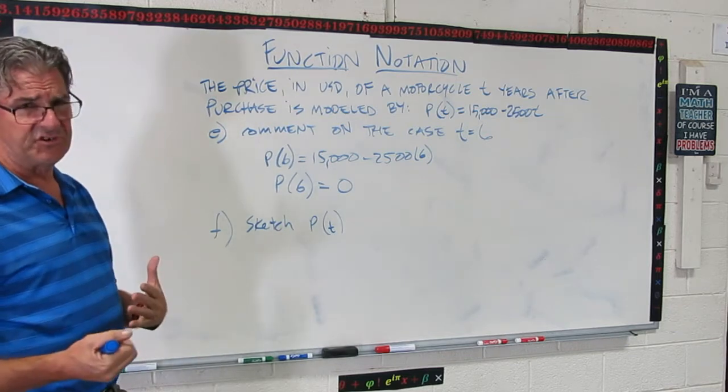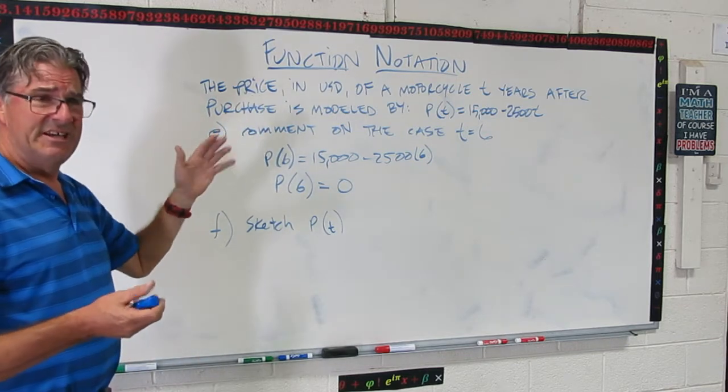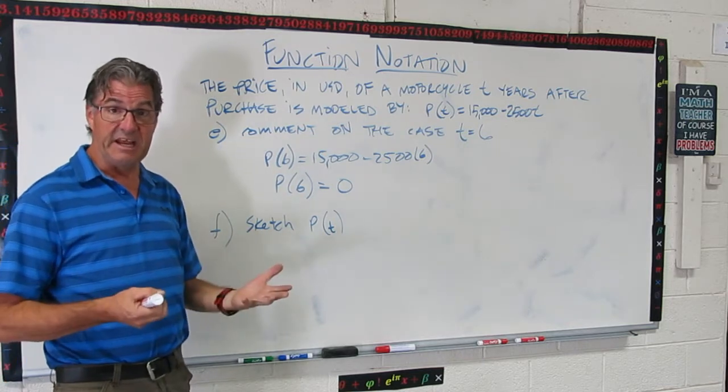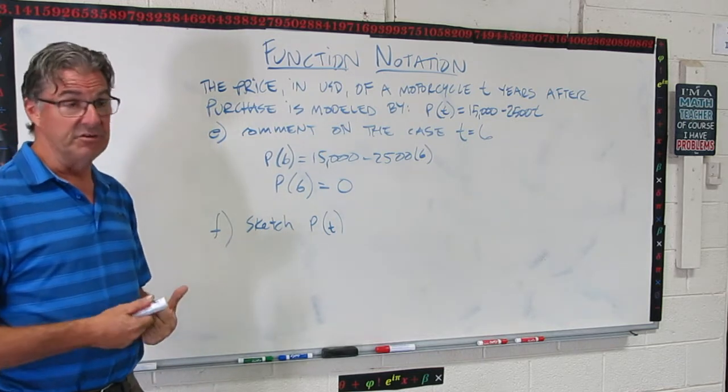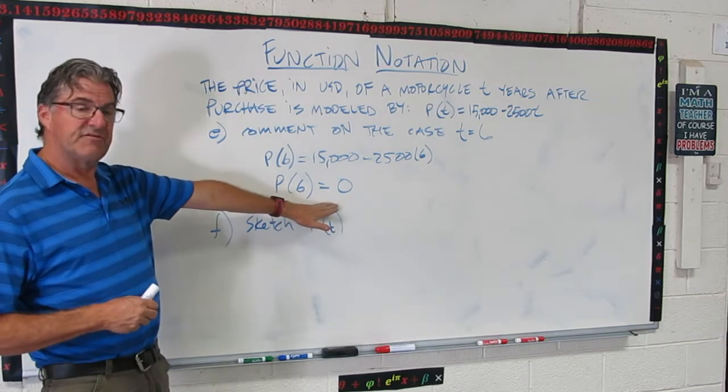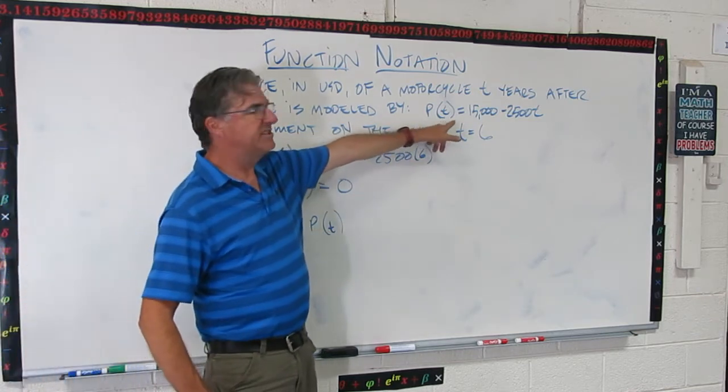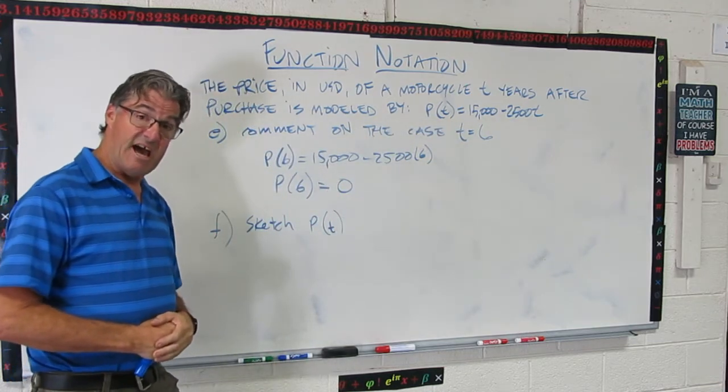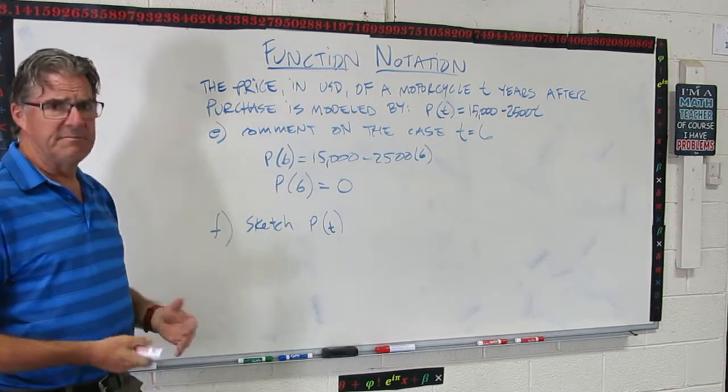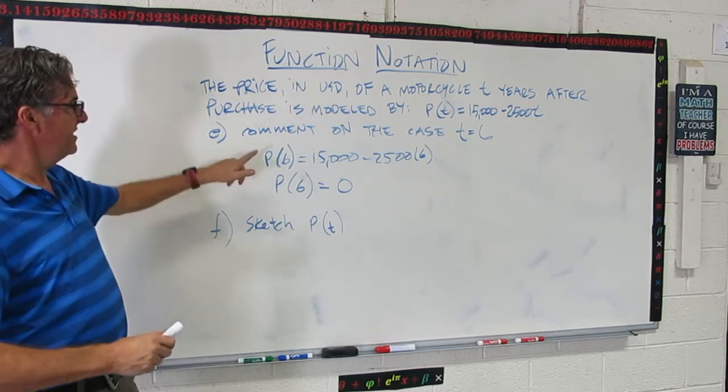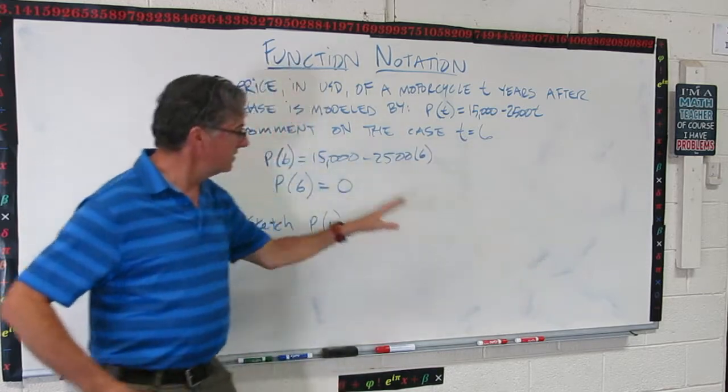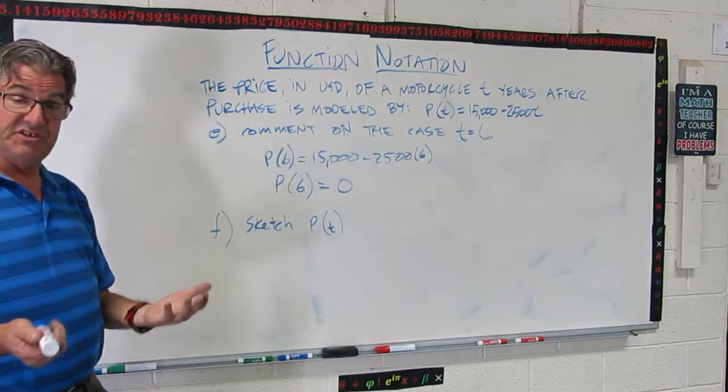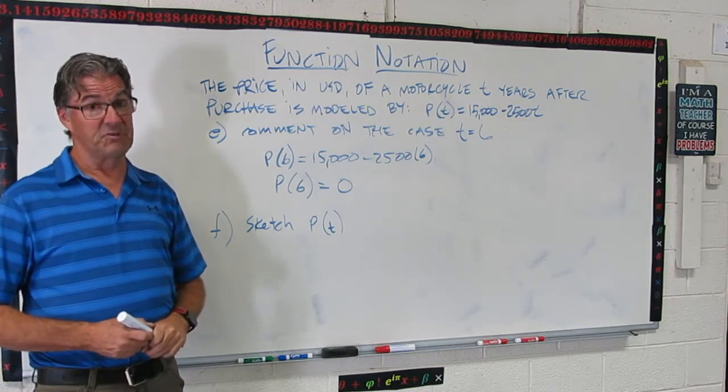Now, in reality, probably not true. Vehicles like motorcycles and cars tend to, they'll retain their value. They lose a lot of it in the beginning, but they'll still have some value. So this is not really accurate as far as this function needs to be a little different to actually model this kind of a price decrease accurately. But for this problem, this is totally fine. So this means when you say comment on the case t = 6, you want to do the show this math and then say something. Like, after 6 years, the motorcycle has no value.